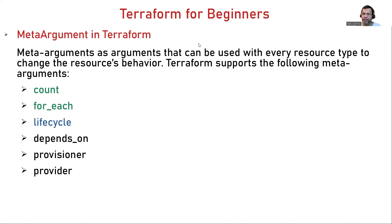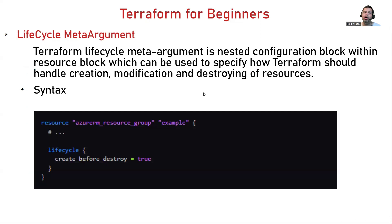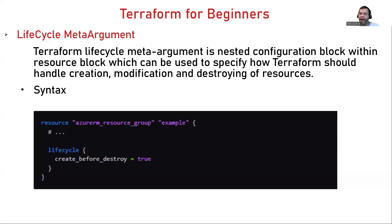Let's together learn the lifecycle meta argument. The Terraform lifecycle meta argument is a nested configuration block within the resource block, which can be used to specify how Terraform should handle the creation, modification, and destroying of resources. In short, you can define the lifecycle block inside the resource block and it will help you handle the creation, modification, and destroying of that particular resource.